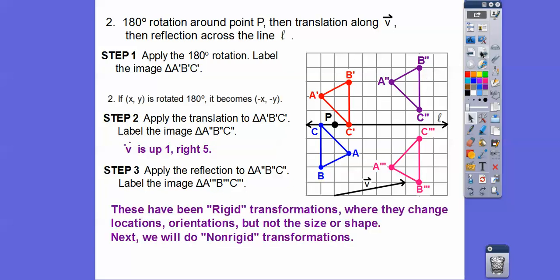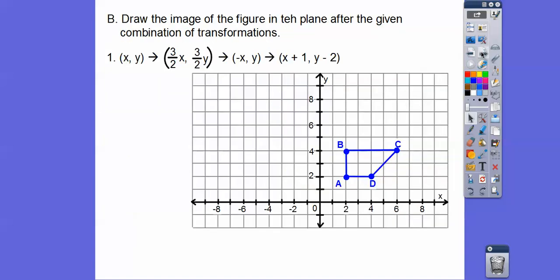These are called rigid transformations — they change locations and orientations sometimes, but they don't change the size or shape. If they did change size, they're called non-rigid transformations, which involve dilation — like taking a magnifying glass and making figures bigger or smaller.